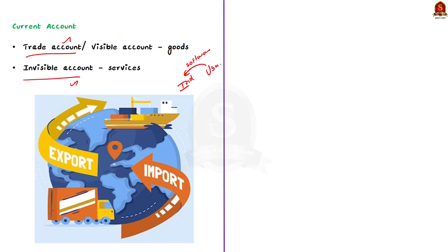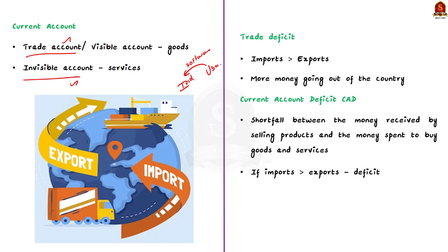Now let us see the deficit. First, what is trade deficit? It is a generic term. It is possible that a country — say India — imports more than it exports. In such a case, it would have a deficit on its trade account. In other words, more money is going out of the country than coming in. This is called trade deficit.